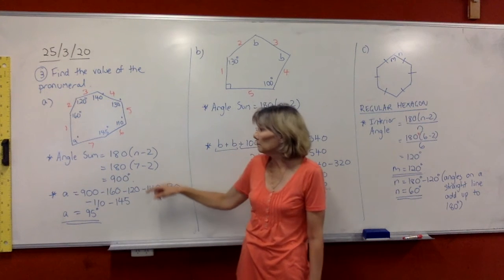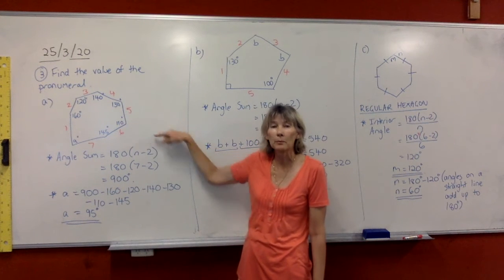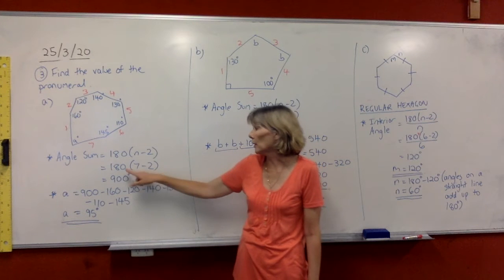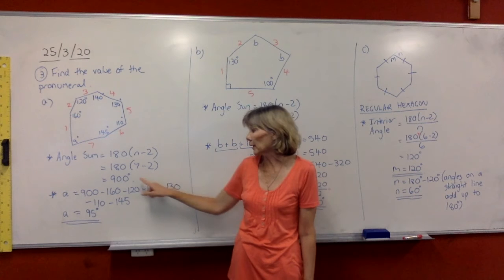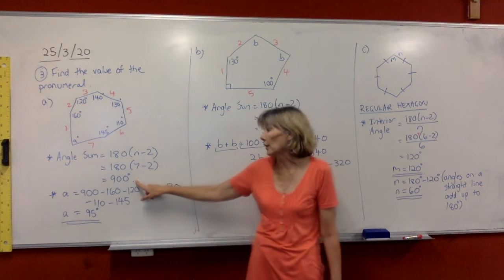So when we do our angle sum, we can use this formula from last lesson to work this out. You're just putting in the number of sides in for n and work that out on your calculator and you get 900 degrees.